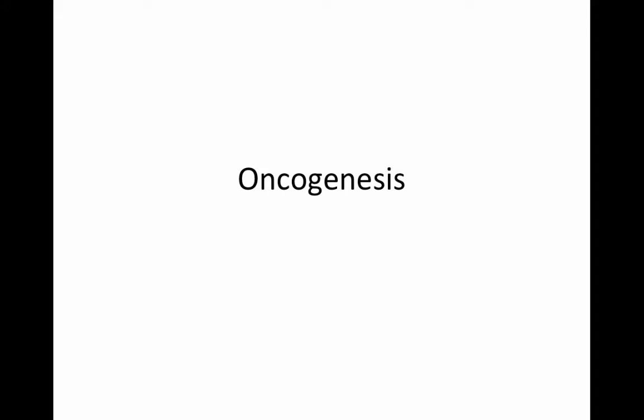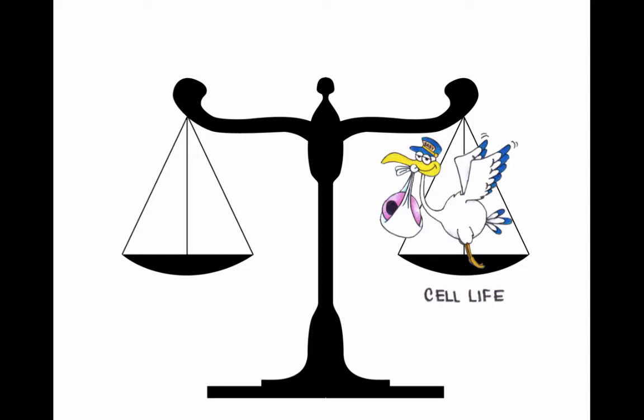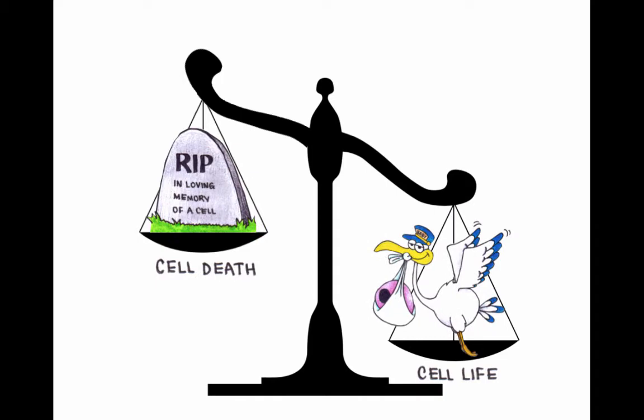Oncogenesis is the formation of cancer. It occurs as a result of the fine balance between life and death being tipped in favour of life. This leads to uncontrolled cell proliferation.